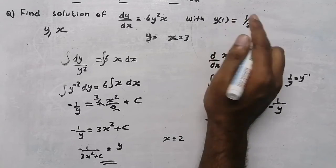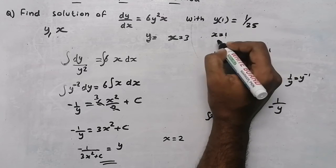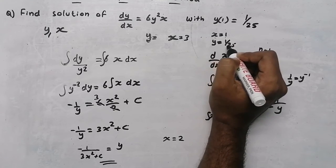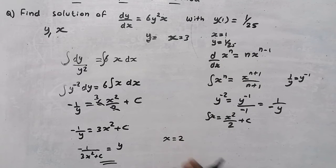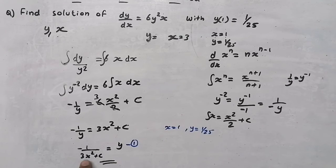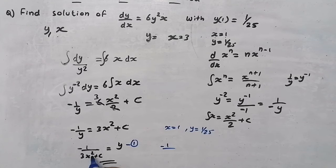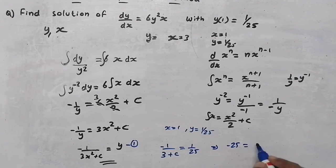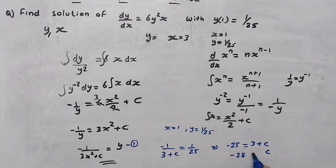To find c, the question gives us the initial condition: y(1) equals 1 by 25, meaning at x equals 1 the value of y is 1 by 25. Substituting into the equation: minus 1 divided by (3 times 1 squared plus c) equals 1 by 25. This gives minus 25 equals 3 plus c, so c equals minus 25 minus 3, which is minus 28.